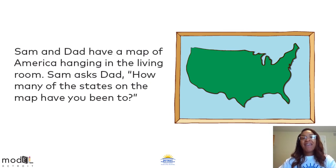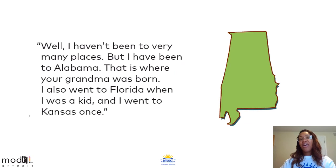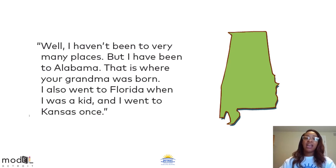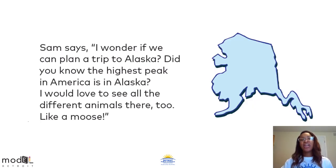Sam and dad have a map of America hanging in the living room. Sam asked dad, how many of the states on the map have you been to? Well, I haven't been to very many places, but I have been to Alabama — that is where your grandma was born. I also went to Florida when I was a kid and went to Kansas once. Sam says, I wonder if we can plan a trip to Alaska. Did you know the highest peak in America is in Alaska? I would love to see all the different animals there too, like a moose.